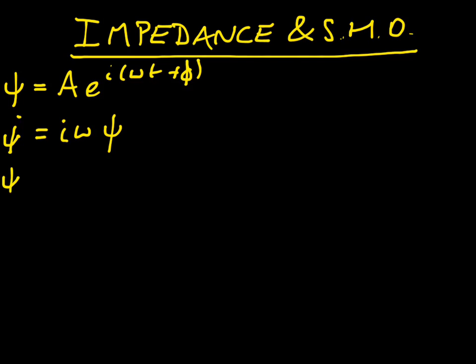Then we can differentiate again and get ψ̈, which is equal to -ω²ψ. If you're not clear on that, you should remember that when you differentiate the exponential with respect to time, you bring down a factor of iω every time, and remember that i² is -1.